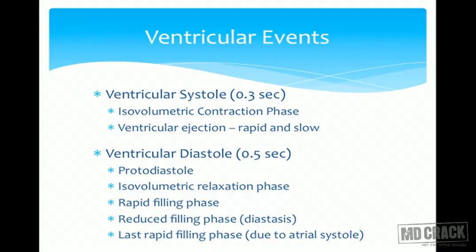After a delay of about 0.1 second, the action potential spreads into the bundle of His and rapidly to both ventricles, causing them to contract. Before contraction, the semilunar valves — aortic and pulmonary — are closed, while the AV valves — mitral and tricuspid — are open. As the ventricle starts contracting, pressure inside rises, and blood tries to regurgitate back into the atria.